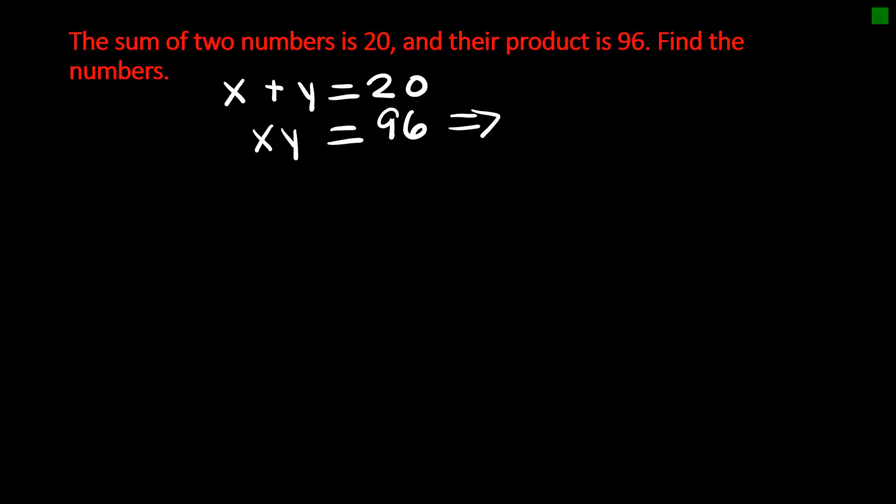If I take the second equation and I solve for y, I have 96 divided by x. So let me go back and substitute that into my first equation for y. So I have x plus 96 over x equals 20. If I multiply every term by x, I get rid of my fraction and I have x squared plus 96 equals 20x.